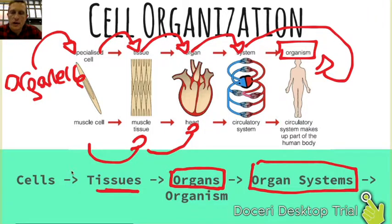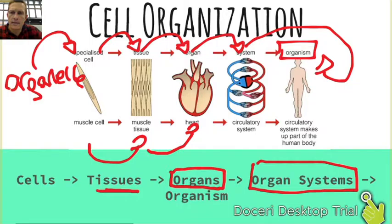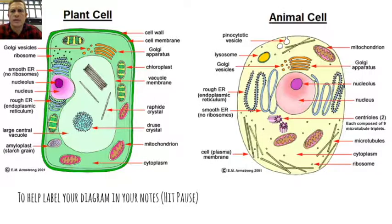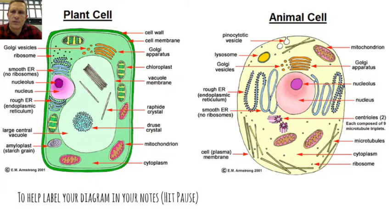That covers the entire content of the green sheet presentation. The last thing you need to do on your green sheet is label the diagram. This would be a good time to hit pause and use these two pictures to label the rest of your green sheet.